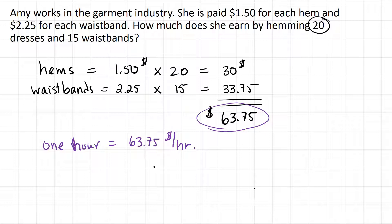But what if she is slow and it takes her a long time to do all those hems and waistbands, and it takes her the whole day and she works eight hours that day? If it takes her eight hours, then that salary, which is $63.75, divided by eight, works out to be $7.97 an hour.